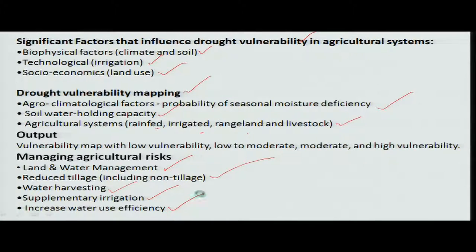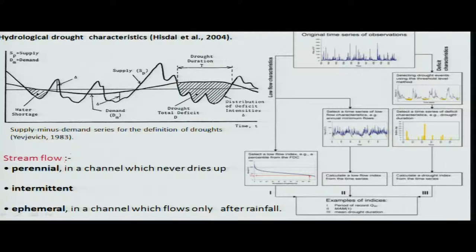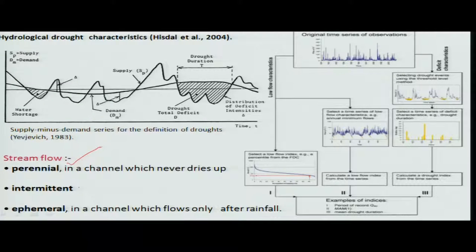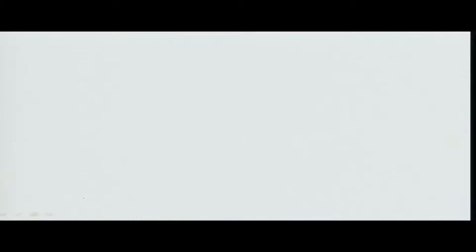Regarding river flow, when flow is less than the normal mean it is called a drought. There are two types of streams: perennial streams that provide water throughout the year, intermittent streams that flow seasonally, and ephemeral channels that flow only immediately after rainfall.